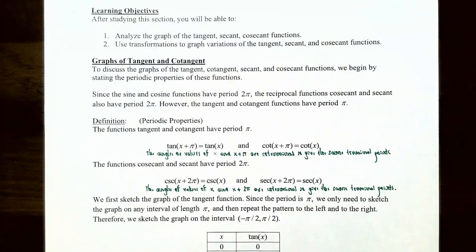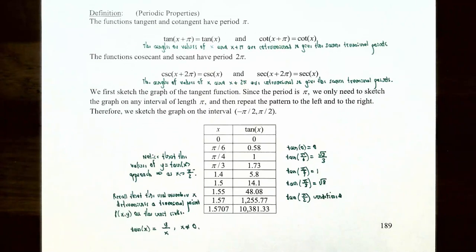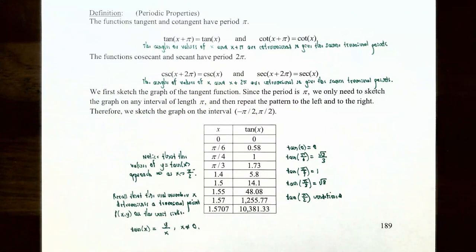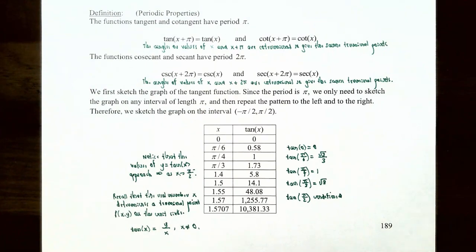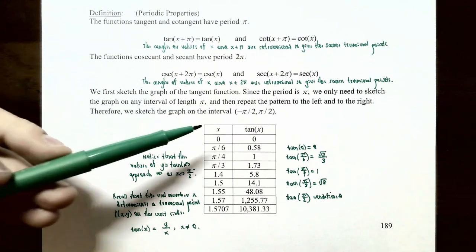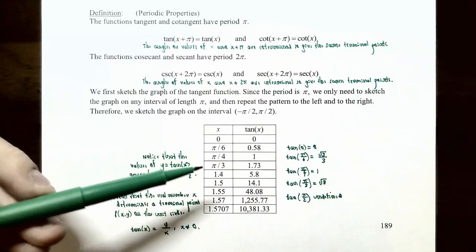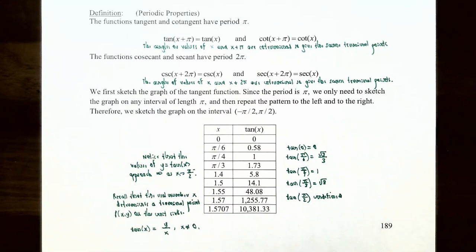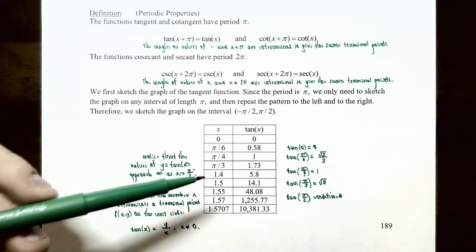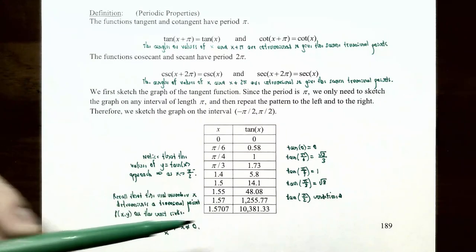Let's begin by providing a sketch of the tangent function. Since the period is π, we only need to sketch the graph on any interval of length π radians, and the pattern will repeat left and right. We'll sketch the graph on the interval from negative π/2 to π/2. Let's make a table of values with x = 0, π/6, π/4, π/3, then increasing values approaching π/2: 1.4, 1.5, 1.55, 1.57, and 1.5707.